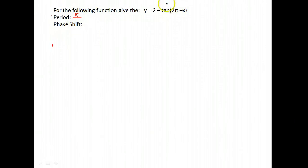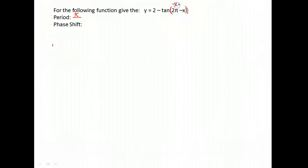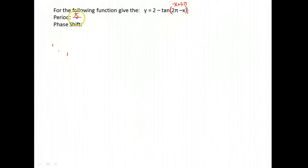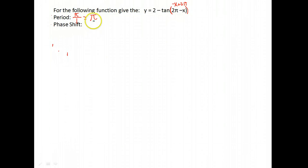We have tangent of (2π - x). Normally we're used to x being written first, so I'll reverse it: that's the same as tan(-x + 2π). To find the period, take the number directly in front of x and divide π by that number. If it's negative, just use the absolute value. So there's been no change to the period — it's still π.